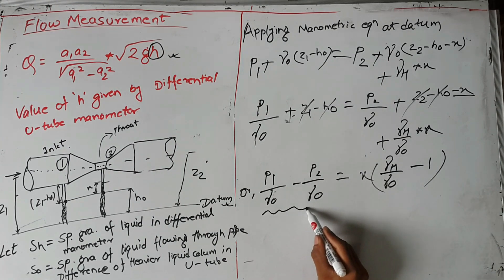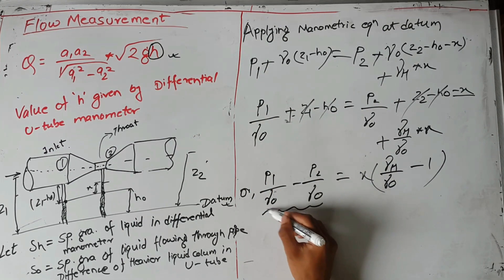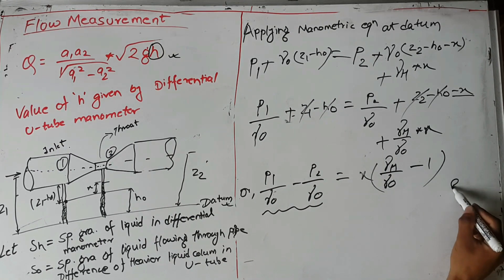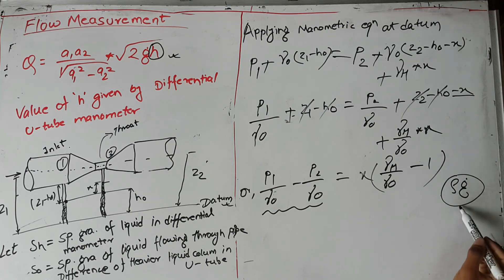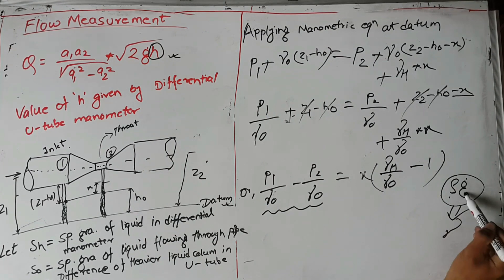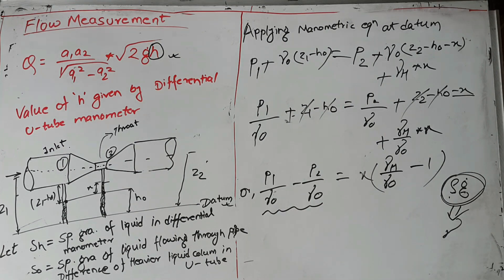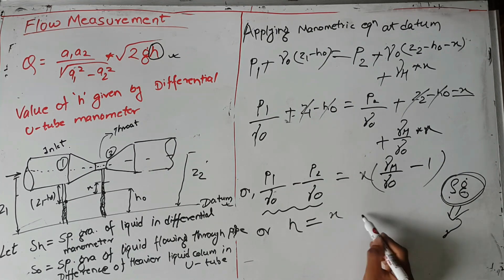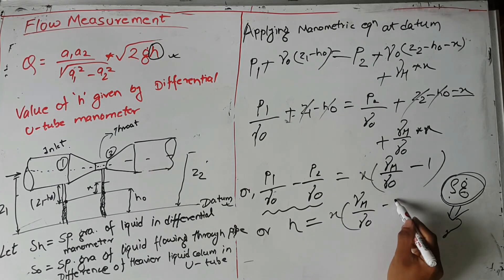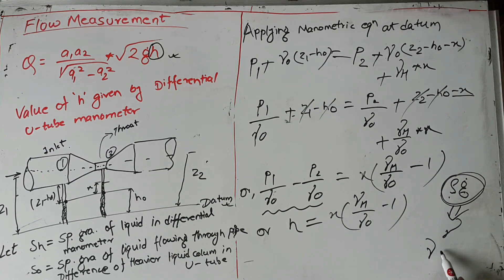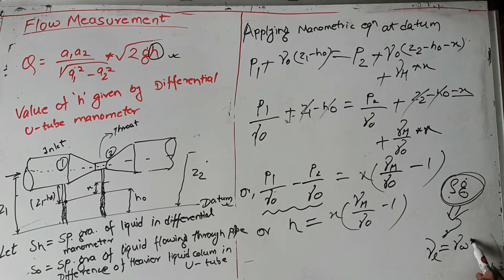Taking X as common, we get (gamma_X / gamma naught minus 1) times X. This is the difference in pressure head H. In place of gamma naught we can write rho times g, where rho is the density of the liquid and g is the acceleration due to gravity — that is the weight density. So H equals X times (gamma_H / gamma naught minus 1).